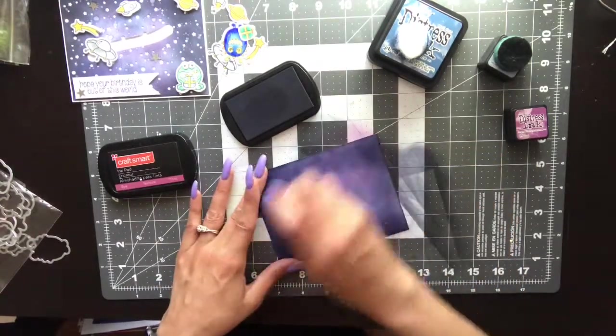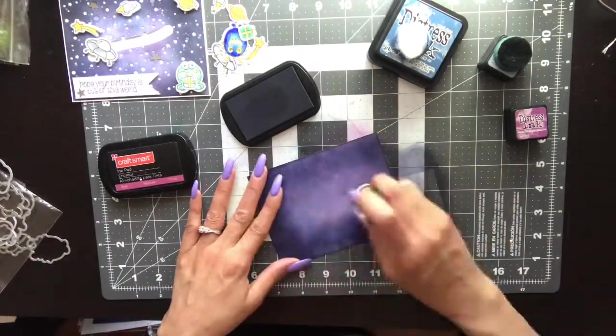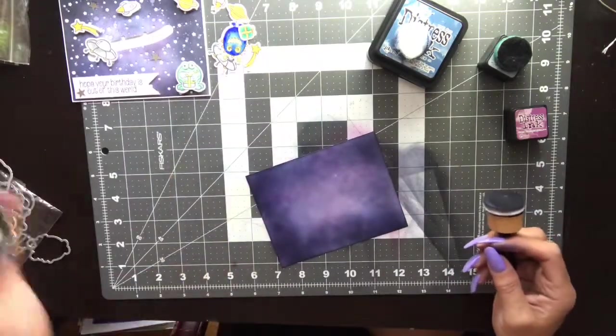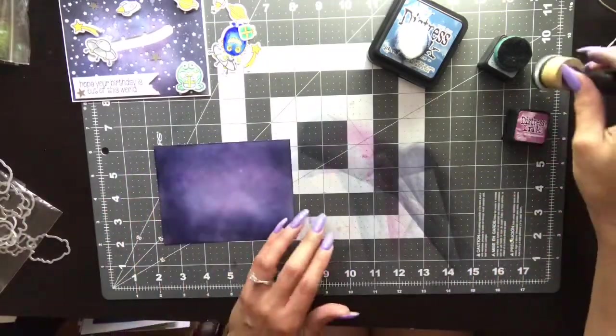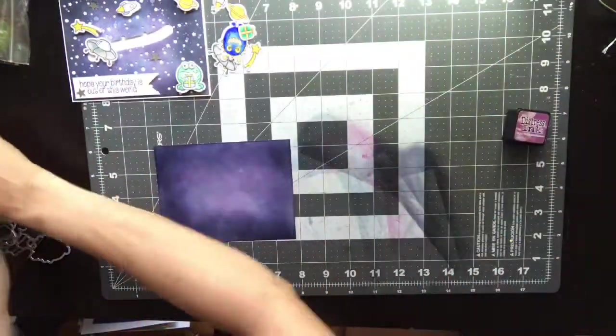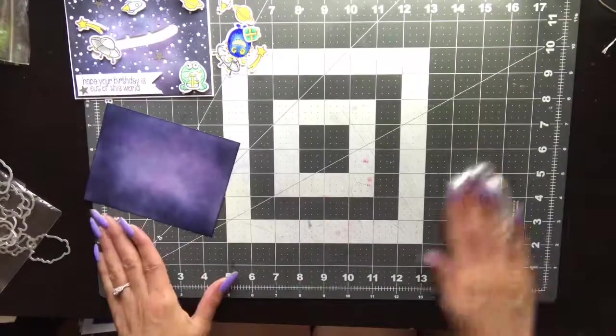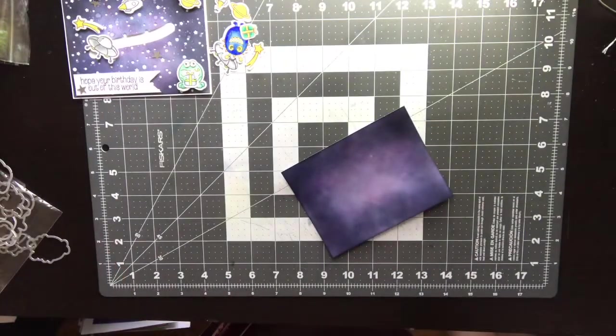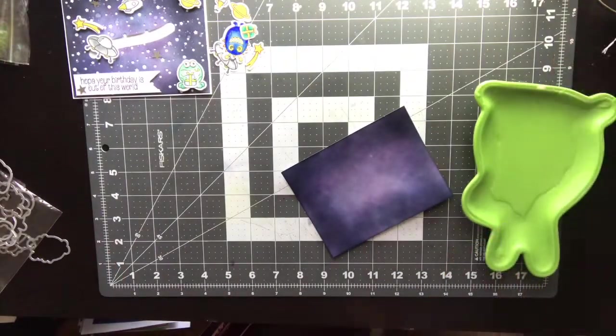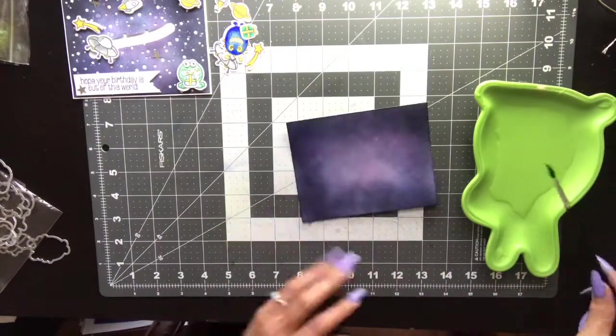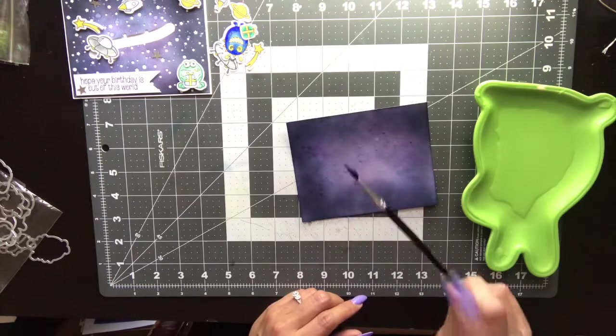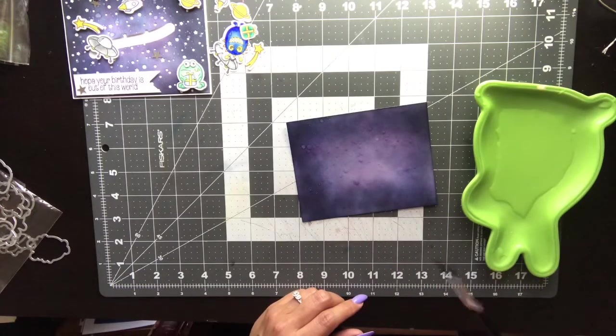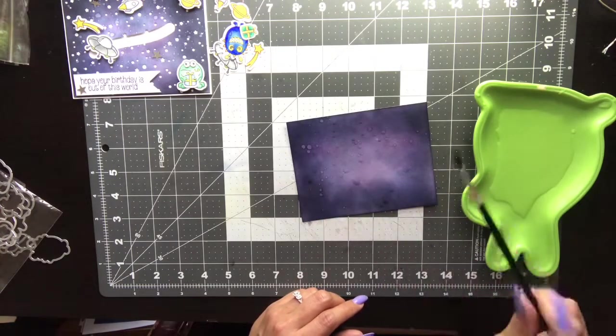I'm applying that black along the edges because I did want the edges of the image to be darker and then lightly going in the middle just to tie it all in. That's the background, doesn't look like much right now but you'll see how it's gonna turn out. Distress inks are reactive inks, they react with any kind of liquid or water.